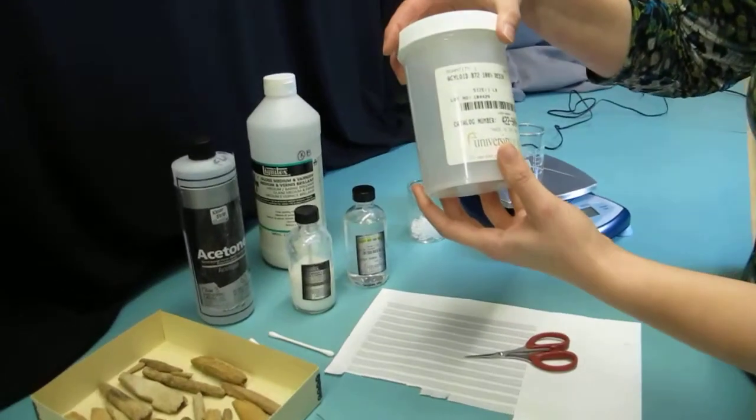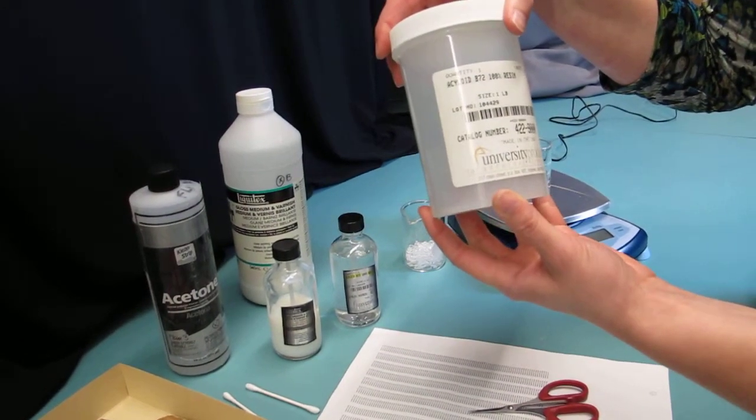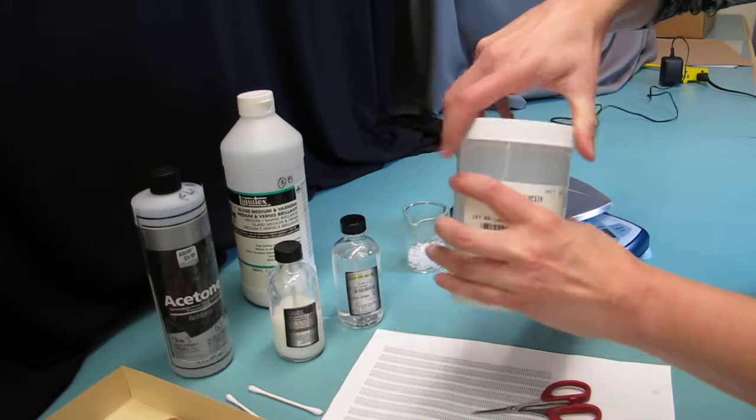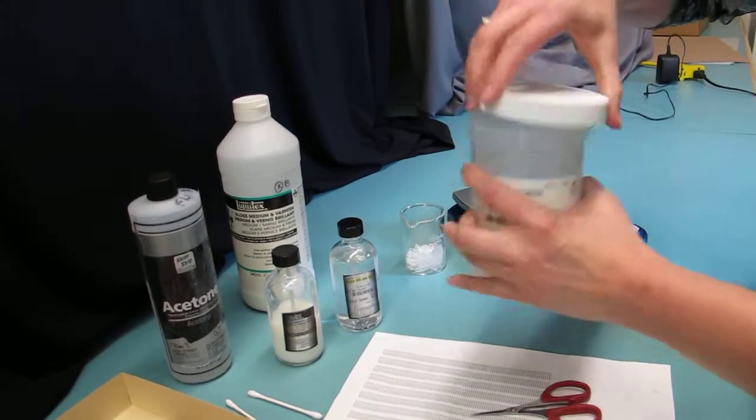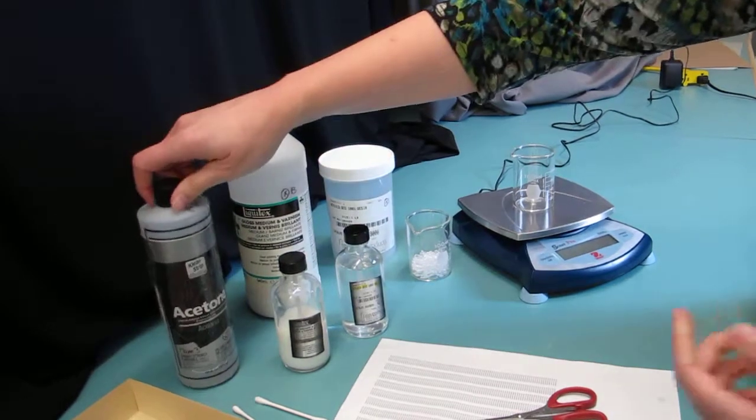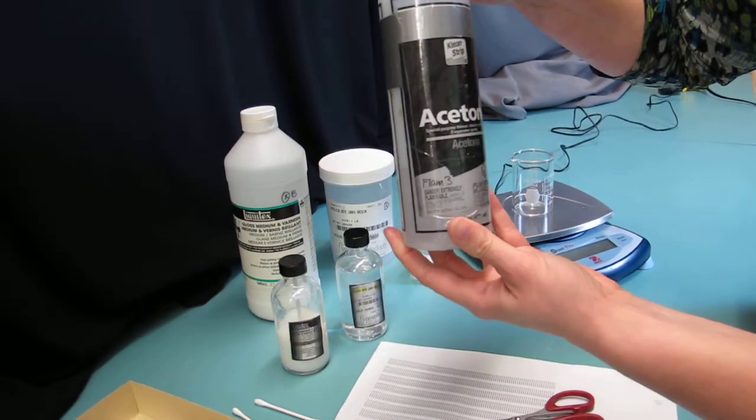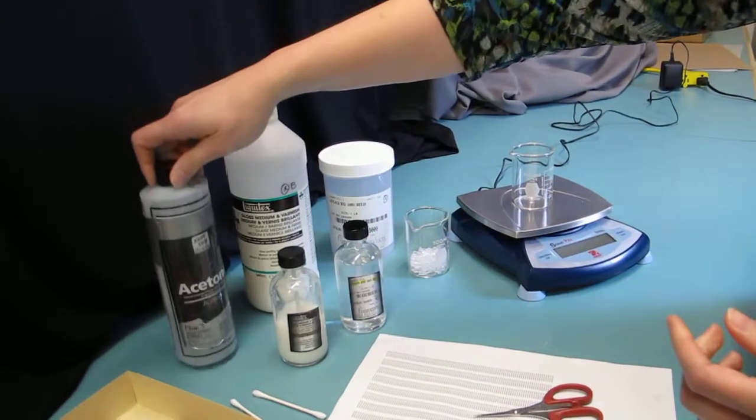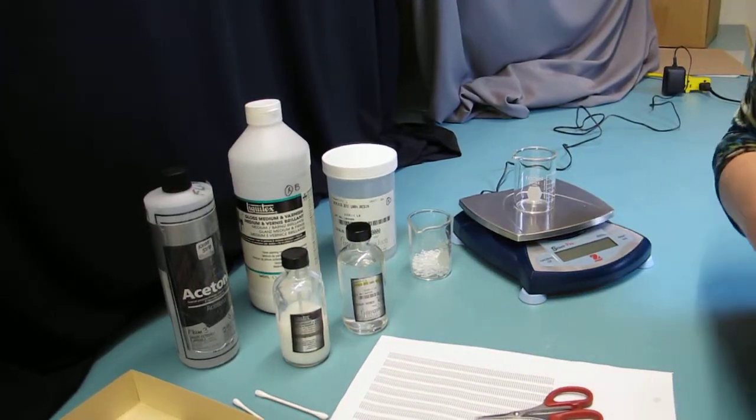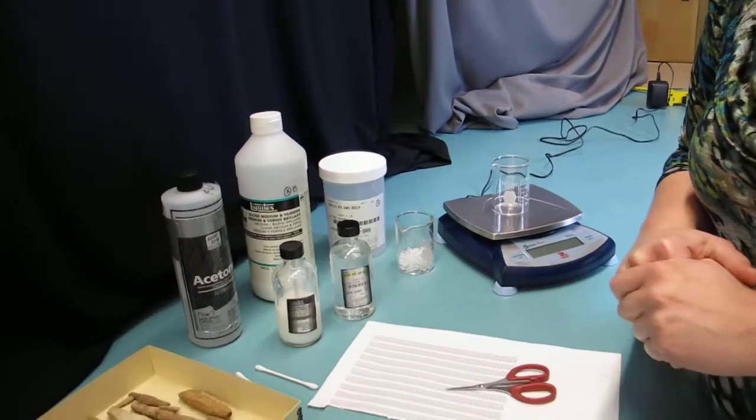Here we have an acrylic resin B72, which we obtained from University Products. This is part of our base coat. It is shipped to you in pellets. In order to create our base coat, you must also mix this with acetone. This is not any regular acetone, but acetone from Fisher Scientific. You can also order the acetone from any lab supply company.